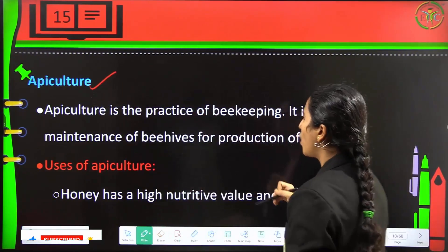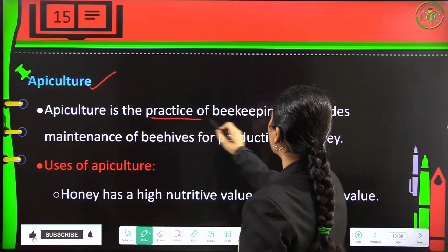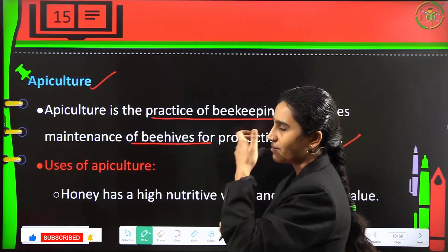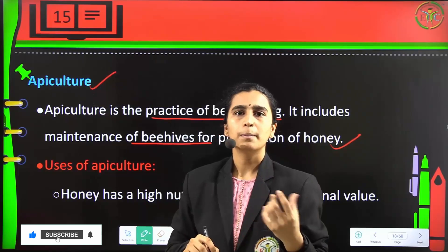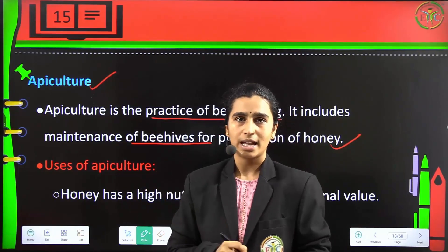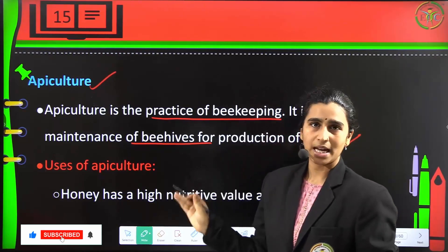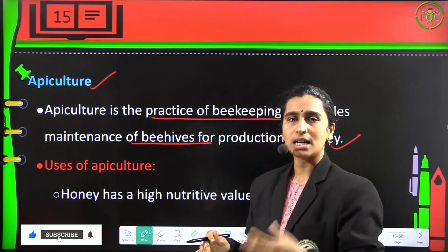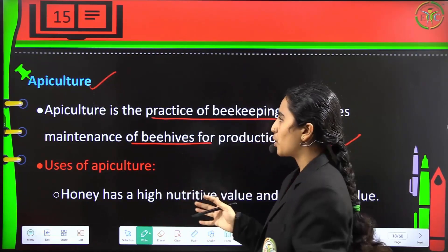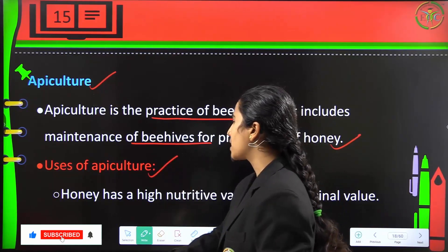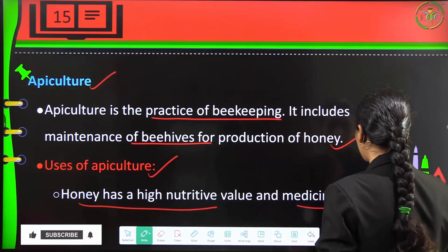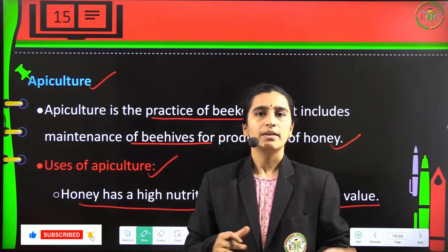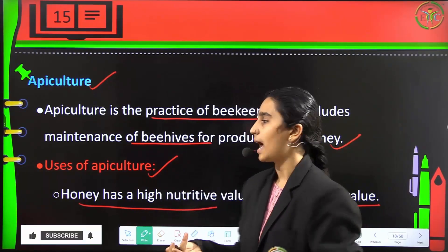Apiculture is the practice of beekeeping, involving the maintenance of beehives for the production of honey. Beehives need proper hygienic conditions and atmospheric conditions so bees can collect nectar from flowers. Honey obtained through apiculture has high nutritive and medicinal value.